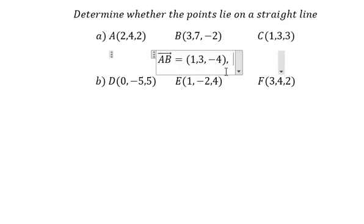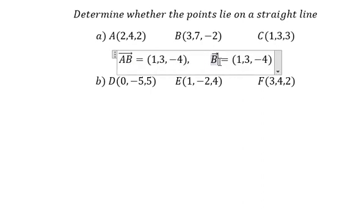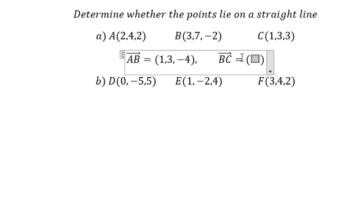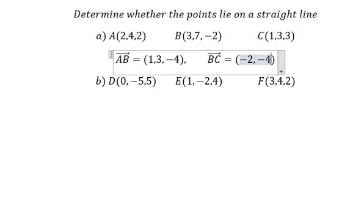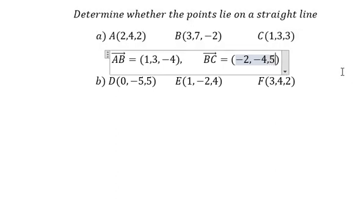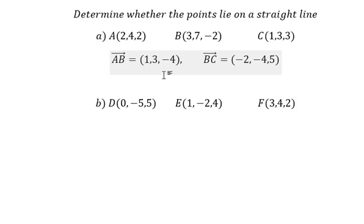For vector BC, we have 1 minus 3, which gives negative 2. Then 3 minus 7, which gives negative 4. And 3 minus negative 2, which gives 5. Now we need to put them into the ratio.